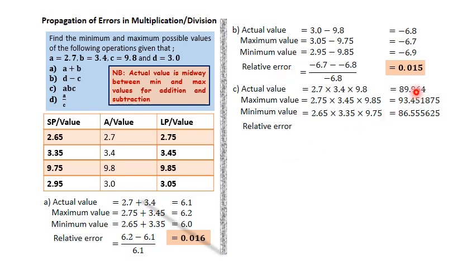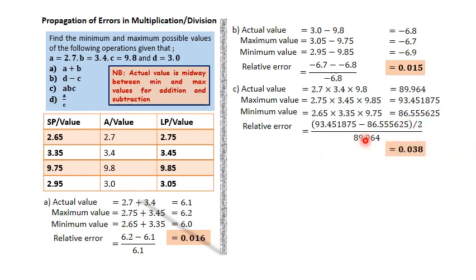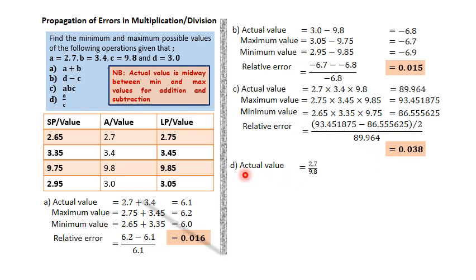For multiplication, the relative error is done differently from addition and subtraction, because the actual value is not an average of the maximum and minimum values. Instead, relative error = (maximum − minimum) ÷ 2, giving the absolute error, then divide by the actual value. In this case we obtain 0.038. For multiplication and division, use (max − min) ÷ 2 ÷ actual.